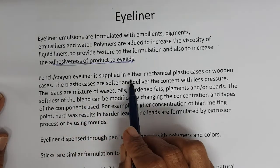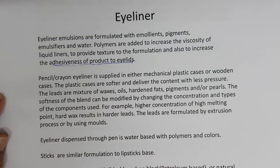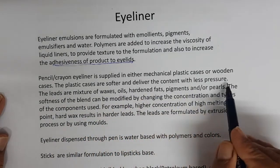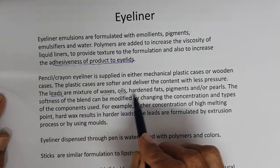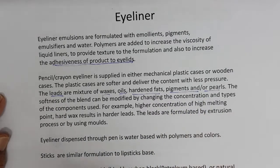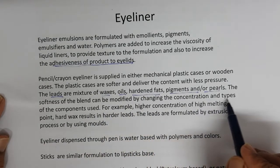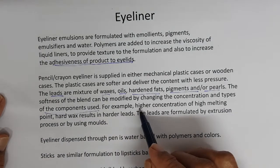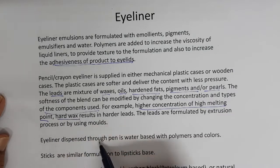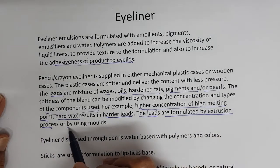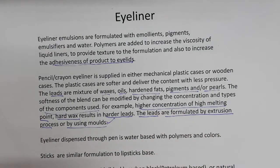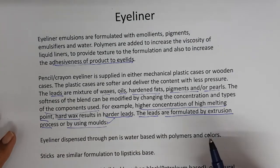So basically in a suspension base or in an emulsion base, if you add the relevant colors, you get the eyeliner. Pencil or crayon eyeliner is supplied in either mechanical or plastic cases or wooden cases. The plastic cases are soft and deliver the content with less pressure. The leads - that is the actual product - are mixtures of waxes, oils, hardened fats, and pigments or pearls. The softness of the blend can be modified by changing the concentration and type of the component used. Higher concentration of high-melting hard waxes results in harder leads. These leads are formulated by extrusion process or by using molds.